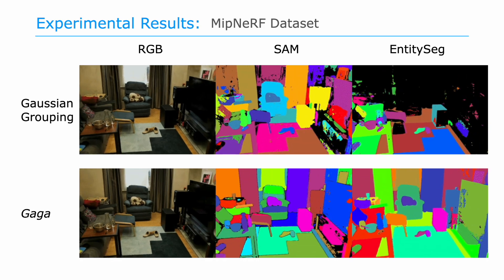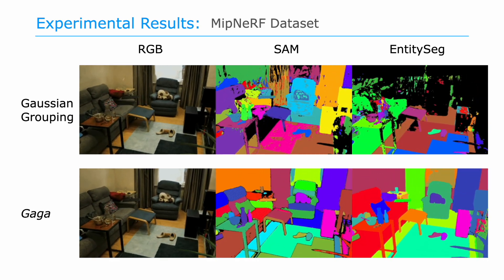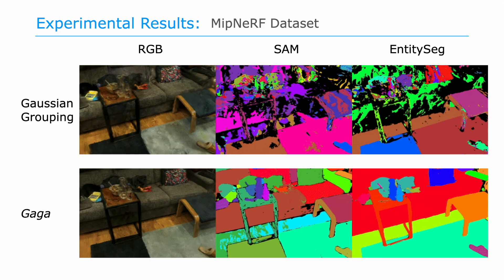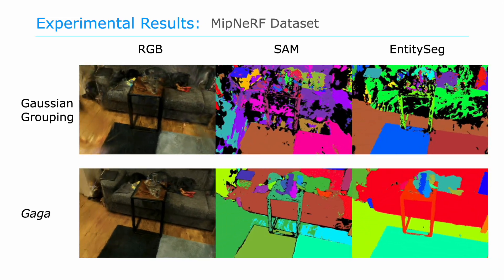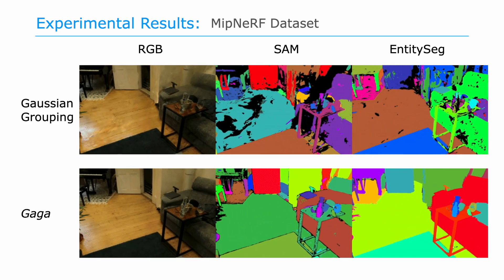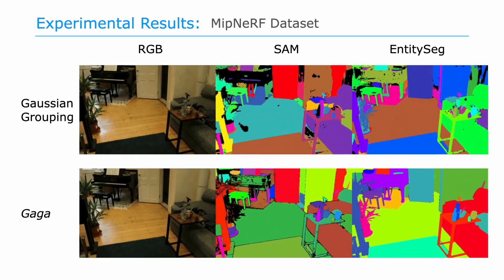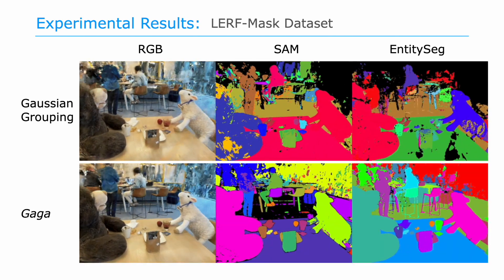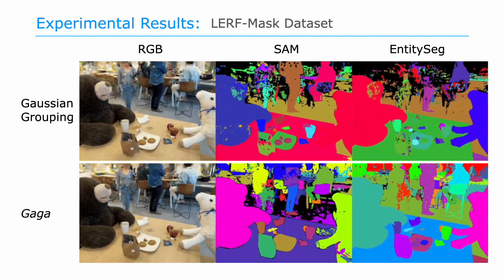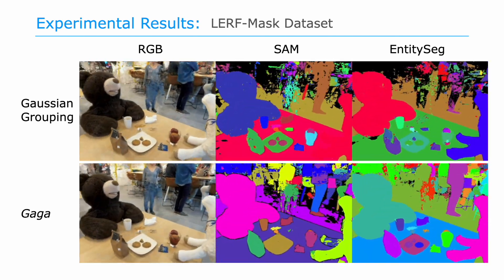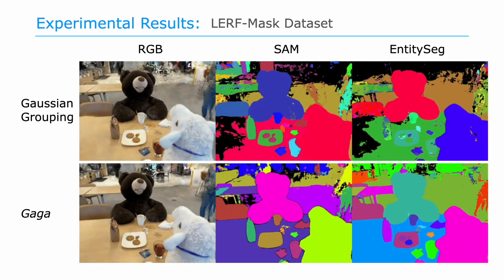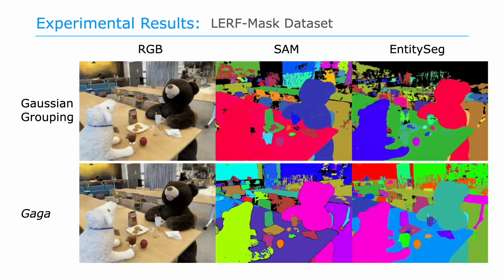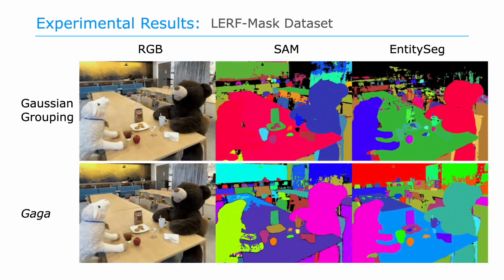Results on the MEEP-NERF dataset: GAGA outperforms previous methods with superior segmentation accuracy, multi-view consistency, and reduced artifacts. Results on the LERF mask dataset: GAGA provides multi-view consistent segmentation for foreground objects and creates fewer empty regions in the background.